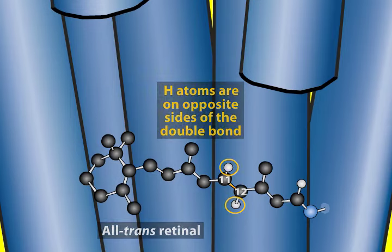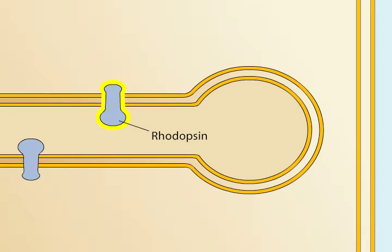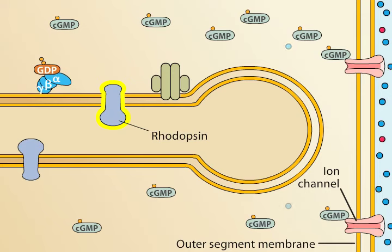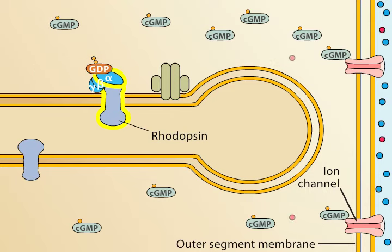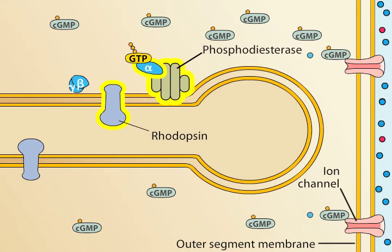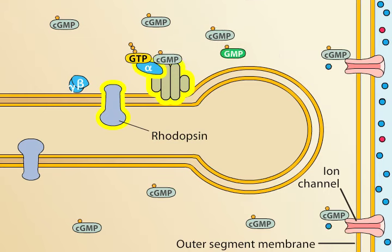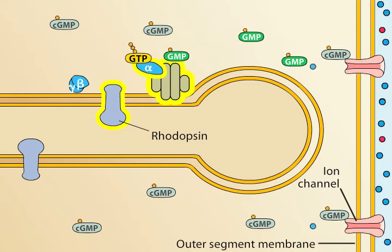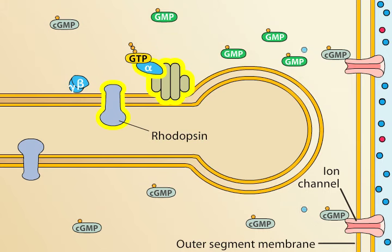The changes in rhodopsin lead to a cascade of events in the cell. The next component in the cascade is a trimeric G-protein called transducin, which in its inactive state is bound to GDP. The altered rhodopsin molecule activates transducin, allowing it to exchange its GDP for GTP. The alpha subunit of transducin then activates a phosphodiesterase in the disc membrane. Phosphodiesterase hydrolyzes cyclic GMP, thus lowering the concentration of cyclic GMP throughout the outer segment.